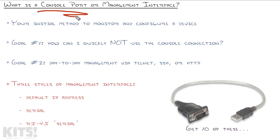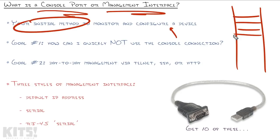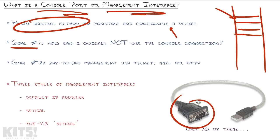On the Cisco SG310 I can flip it around and see a DB9 serial interface on the left-hand side. I've pointed out that console port three times, so it's obviously important. The console port is your initial method to monitor and configure a device. Many switches come out of the box with no IP address, or you may walk into an environment where switches are mounted in a rack with no documentation and no IP label — and you can't interrupt production. That console port is the only way in.